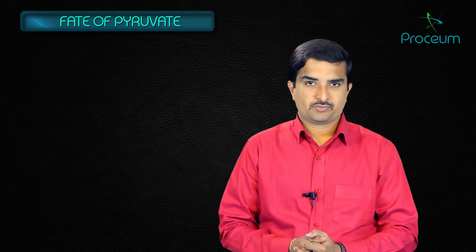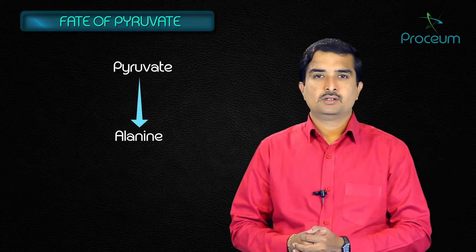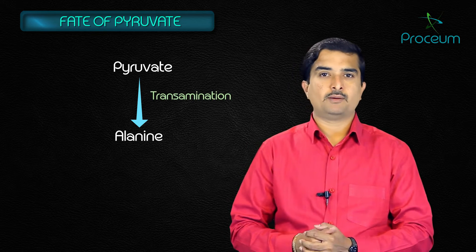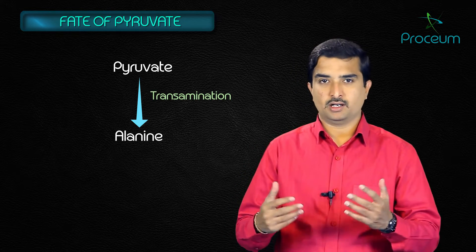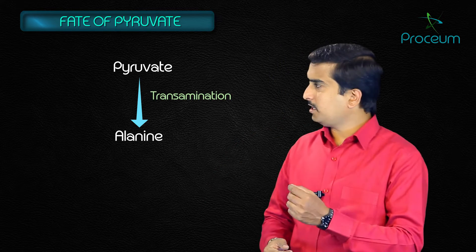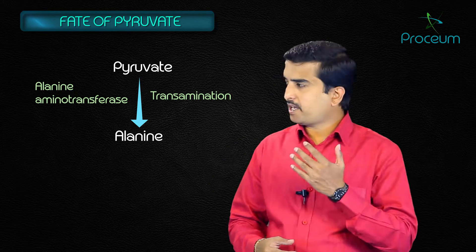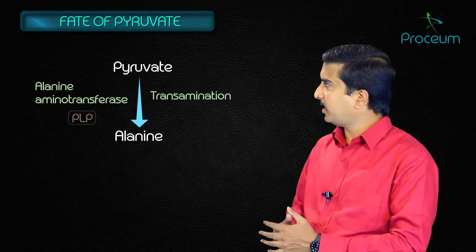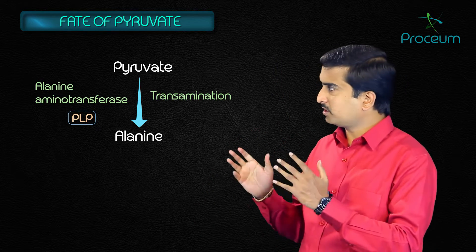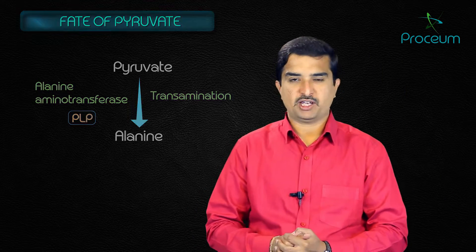The fourth fate is conversion of pyruvate to alanine. Pyruvate can be transaminated to form the amino acid alanine. The enzyme involved is alanine aminotransferase, which requires pyridoxal phosphate (PLP) as a cofactor.